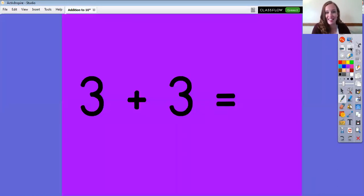I think we only have one more to try together. This one says 3 plus 3 equals. Wow. These are both the same number. So let's go ahead and put 3 in our brain and count up 3 more numbers. 3, 4, 5, 6. The answer is 6.